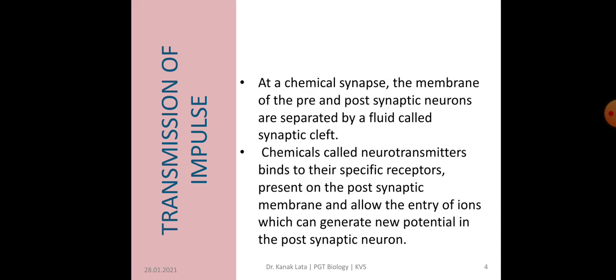But in chemical synapse, the membranes of presynaptic neuron and postsynaptic neurons are separated by a fluid called synaptic cleft. Chemicals called neurotransmitters are present that bind to their specific receptors which are present on the postsynaptic membrane and this allows the entry of ions which can generate new potential in the postsynaptic neuron. A common neurotransmitter substance is acetylcholine.